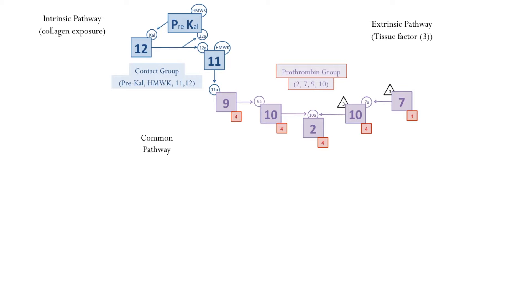The last functional group of coagulation is the fibrinogen group. The fibrinogen group includes factor I, factor V, factor VIII, and factor XIII.